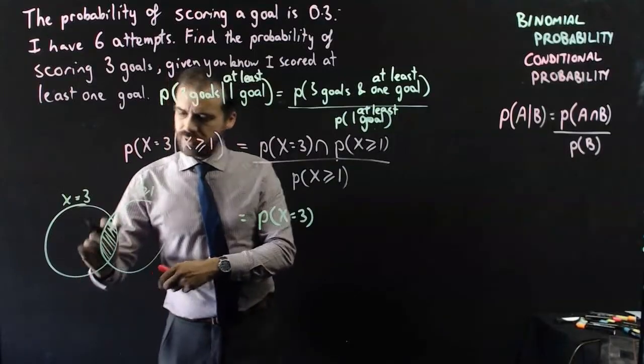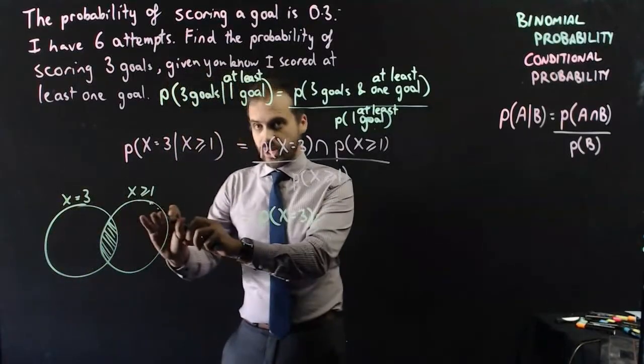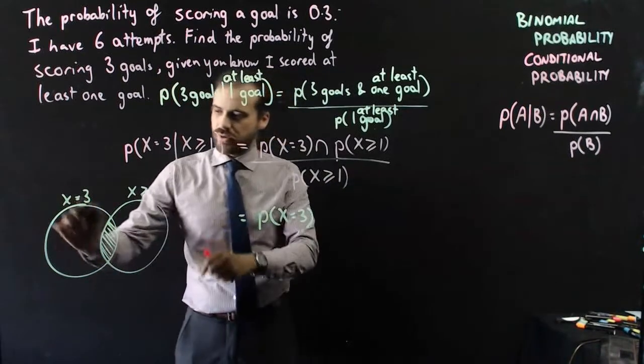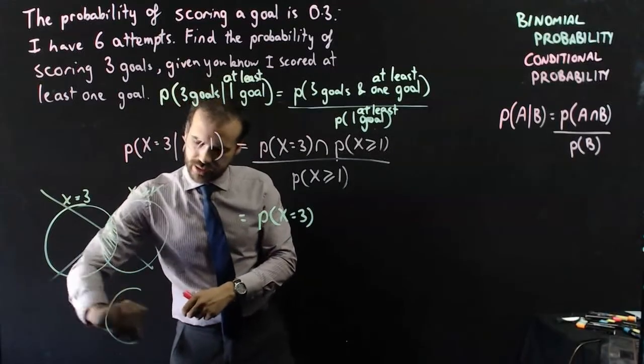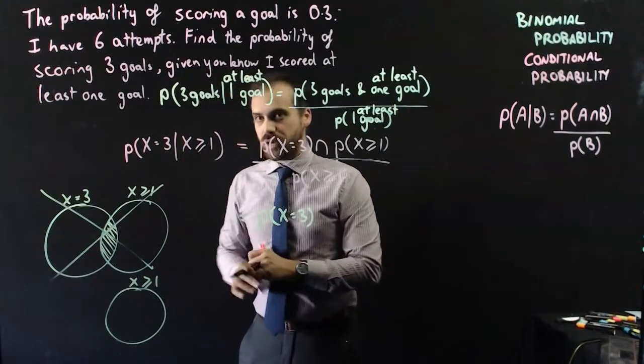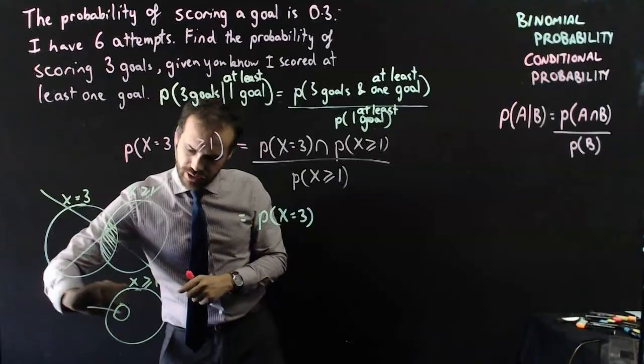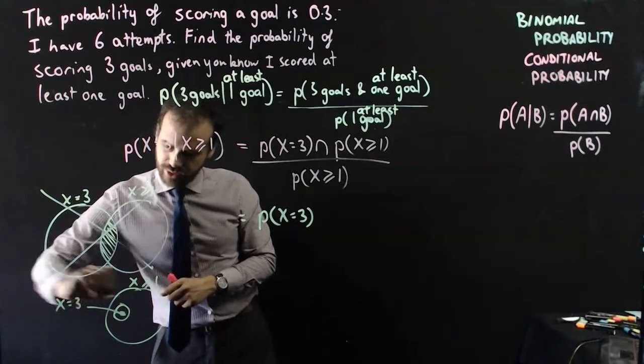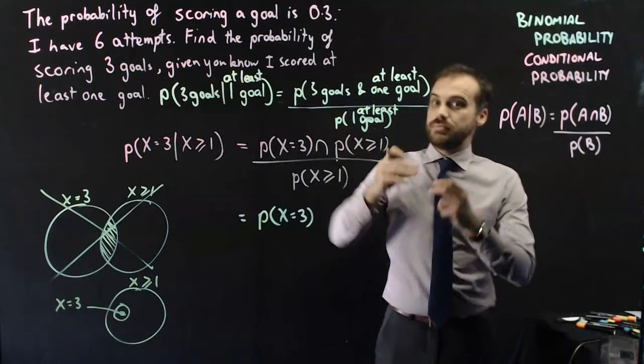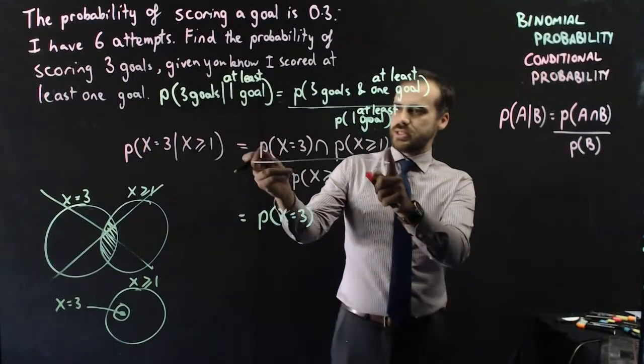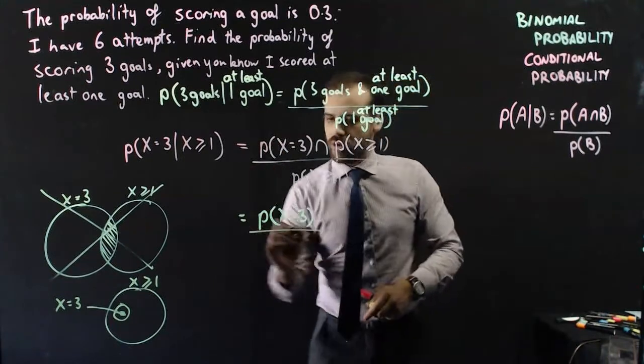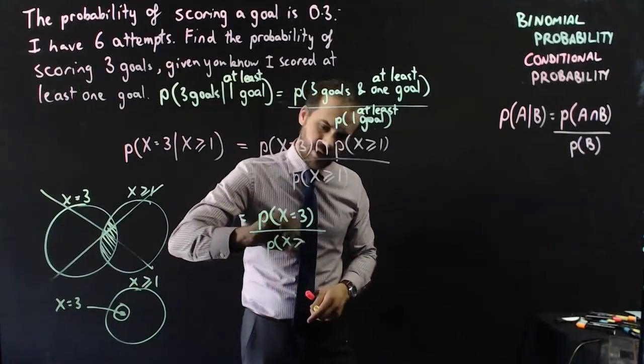This bit here actually sits entirely inside of X is greater than or equal to one. This is actually a bad diagram. The diagram should look a little more like this. X is greater than or equal to one. And sitting inside of X is greater than or equal to one is a small circle there, which is X is equal to three. All of this is to say that because three goals is a subset of at least one goal, we can say that all of this stuff on the top can just be written as probability that X is equal to three over the probability that X is greater than or equal to one.